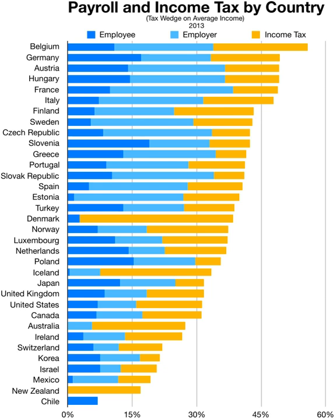It was only in 1894 that the first peacetime income tax was passed through the Wilson-Gorman tariff. The rate was 2% on income over $4,000, equivalent to $113,000 in 2017, which meant fewer than 10% of households would pay any. The purpose of the income tax was to make up for revenue that would be lost by tariff reductions.